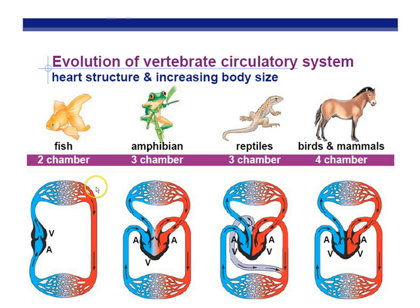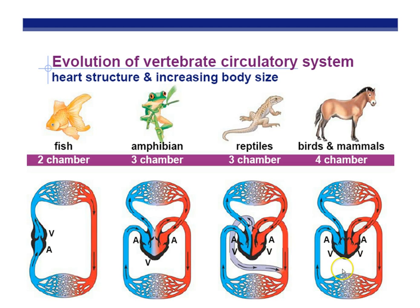Different animals have different types of hearts. Fish have a two-chambered heart — one atrium and one ventricle — which pumps to all the body cells and to the gills. Amphibians and reptiles have a three-chambered heart, and there's mixing of blood between chambers, meaning oxygen-poor blood mixes with oxygen-rich blood, so they're not delivering purely oxygen-rich blood to all body cells. Birds and mammals have a four-chambered heart with complete separation: one circuit delivers oxygen-rich blood to all body cells, and another takes oxygen-poor blood to the lungs.